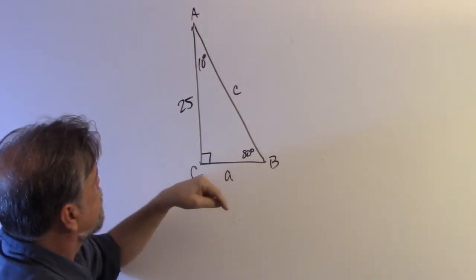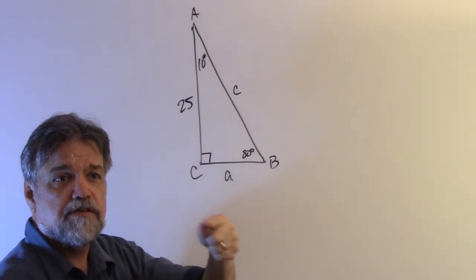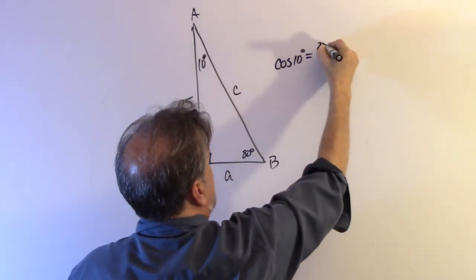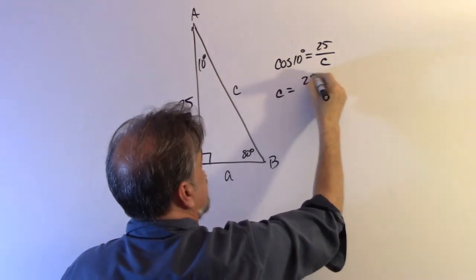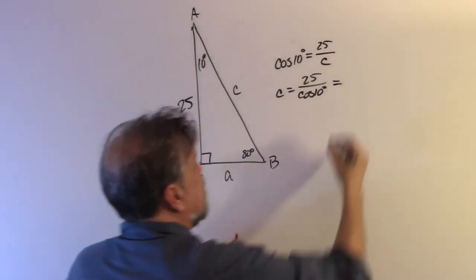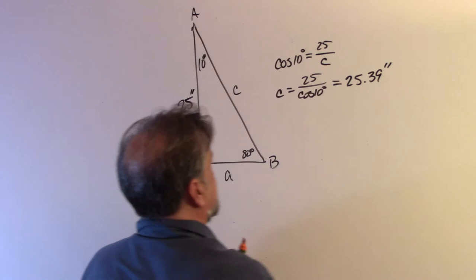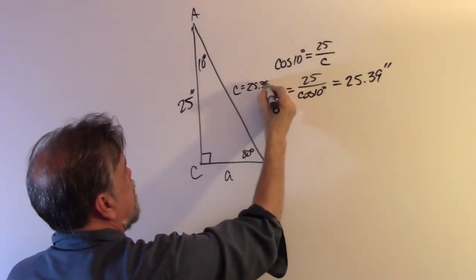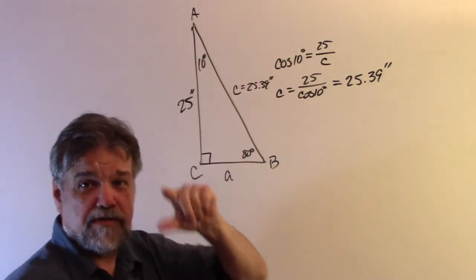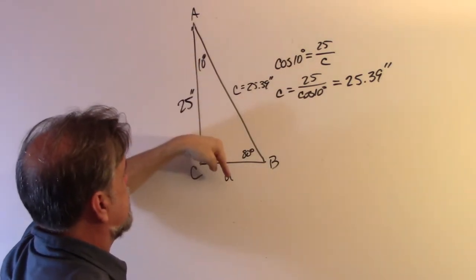Since 25 is the adjacent side for 10 degrees, cosine equals adjacent over hypotenuse. So cosine of 10 degrees equals 25 over c, which means c equals 25 divided by cosine of 10 degrees. My calculator gives approximately 25.39 inches — just barely bigger than that leg. That makes sense because 10 degrees is a very small angle.